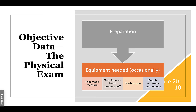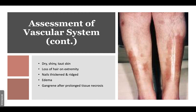Assessment of the vascular system: look for dry, shiny, taut skin, loss of hair to the extremity, and nails that are thickened and rigid. There could be edema, and gangrene after prolonged tissue necrosis. It will start with an ulcerated area that just will not heal because there's not enough blood flow to that area to promote healing.